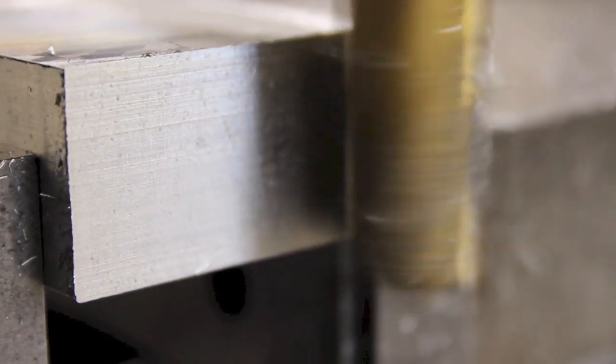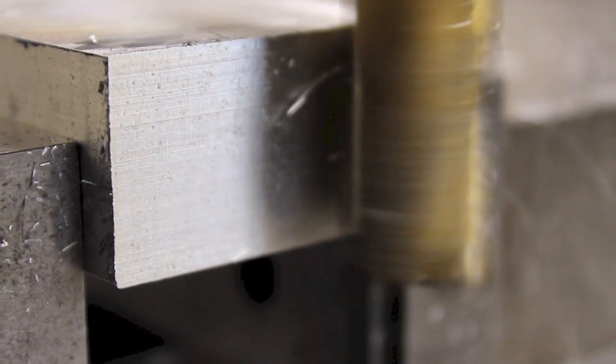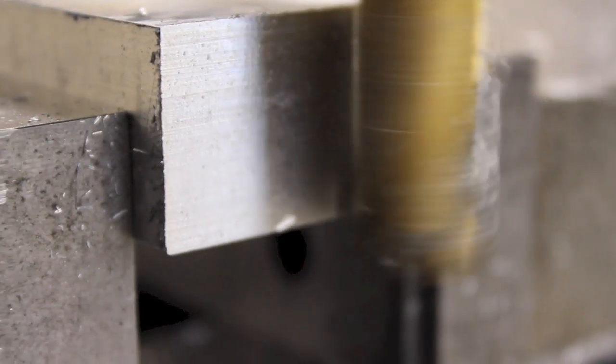On machines that have ball lead screws such as 2 and 3 axis CNC controls, play is virtually eliminated and climb milling is the preferred method of milling.